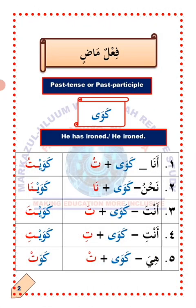So how do you change the verb kawa to suit the following pronouns? Kawa simply means 'he has ironed' or 'he ironed.' He in Arabic is hua, which is the opposite of hea, she. So how do we now change the verb kawa to suit the following pronouns?